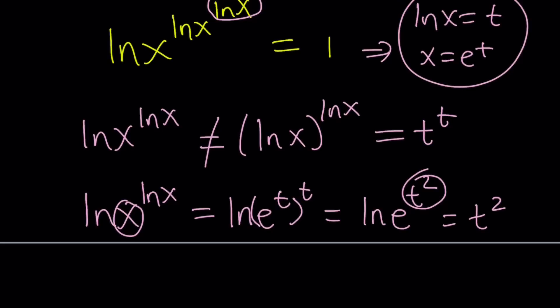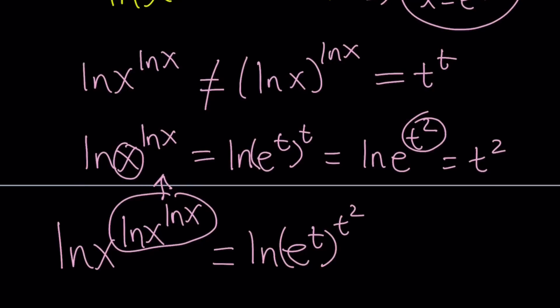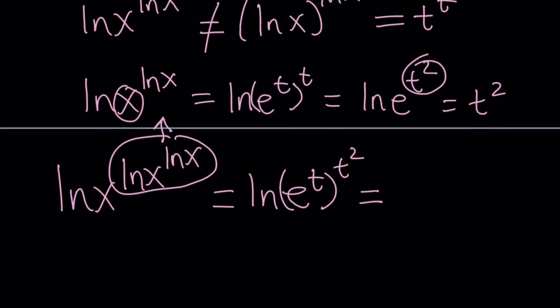Now that's our exponent, and the base is x again. So ln x to the power ln x to the power ln x. Now I've taken care of this, notice that right here. So now we can write this as ln of x to the power ln x, which is e to the t to the power t squared. Awesome. That makes a lot of sense. Hopefully.